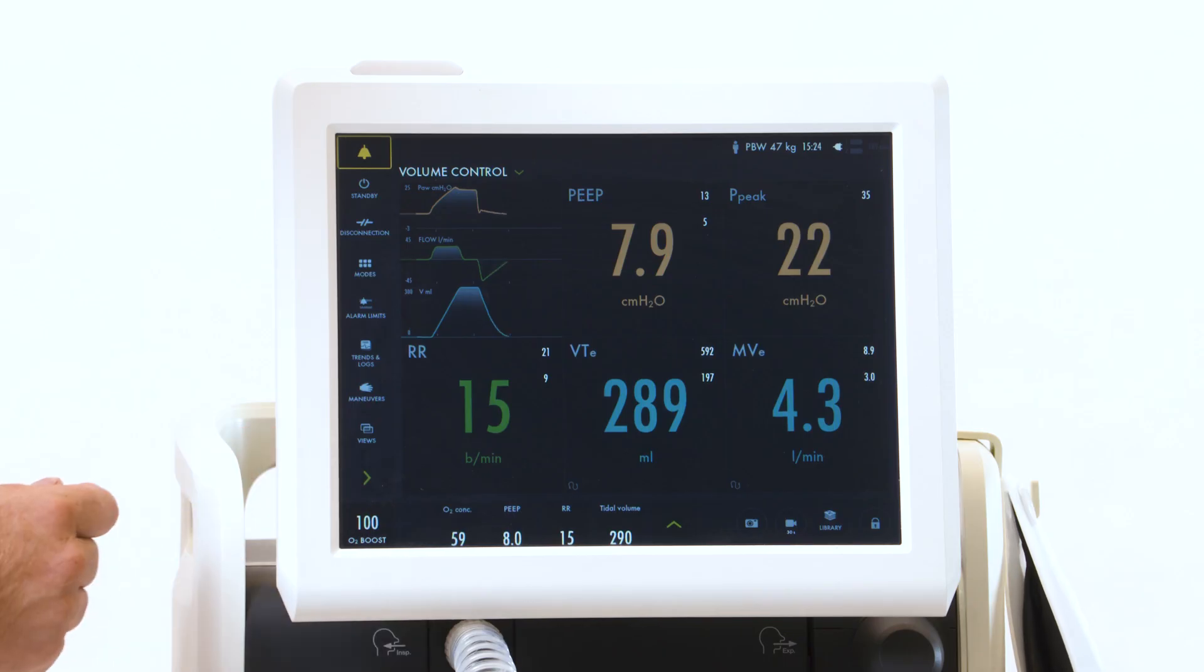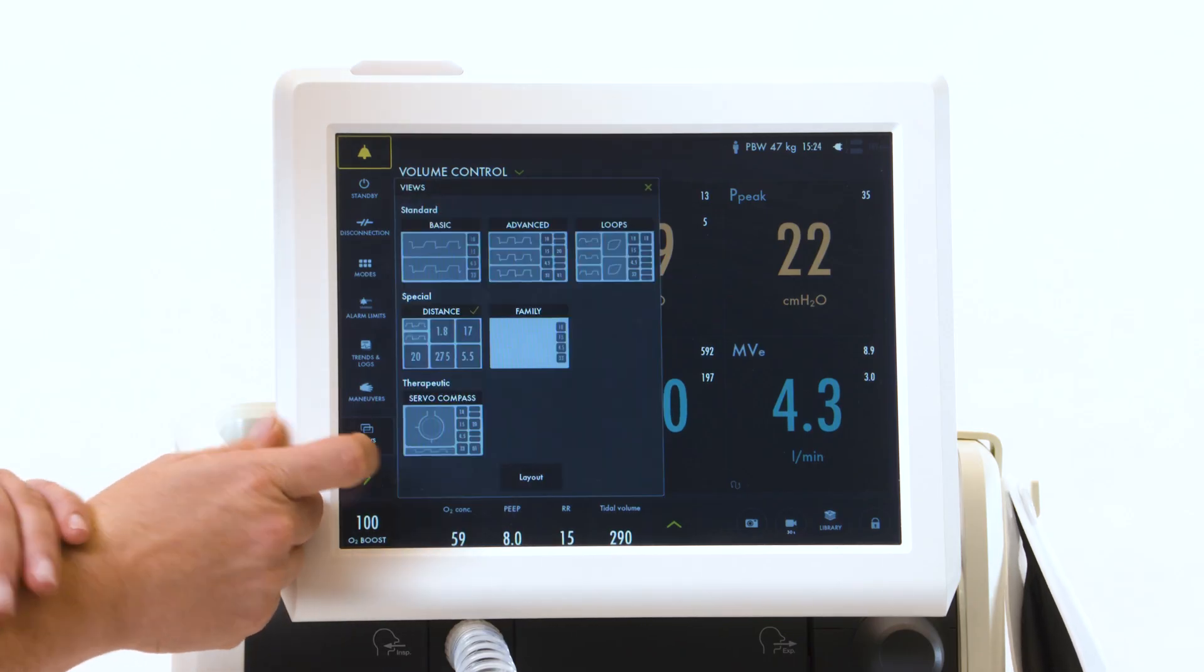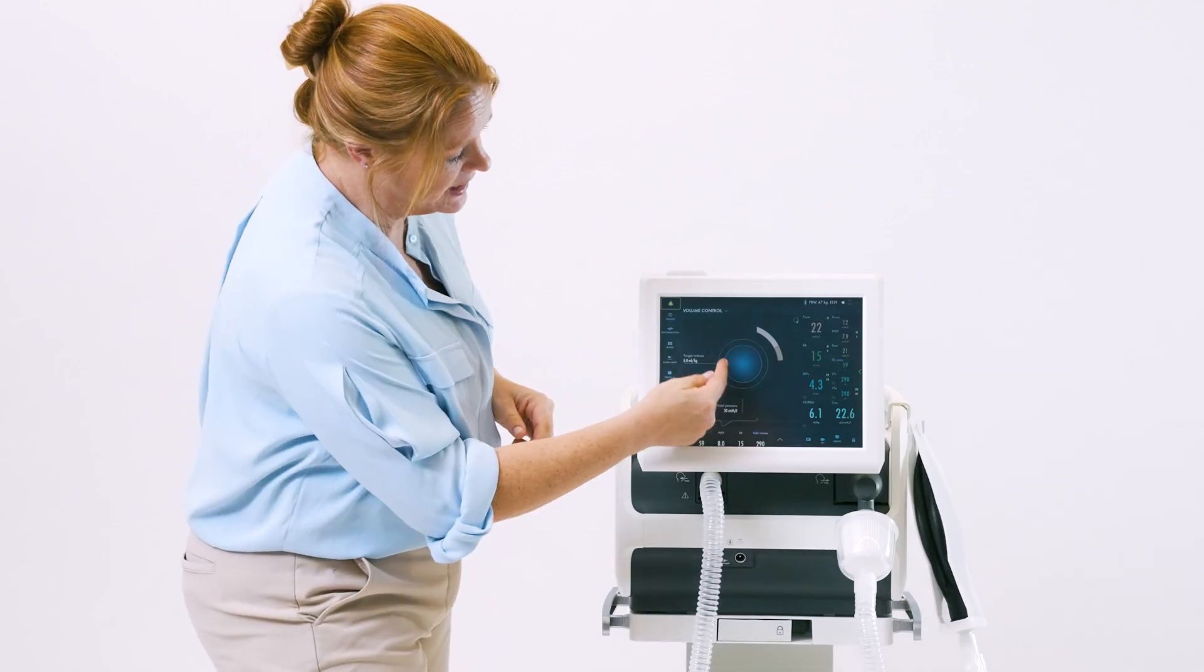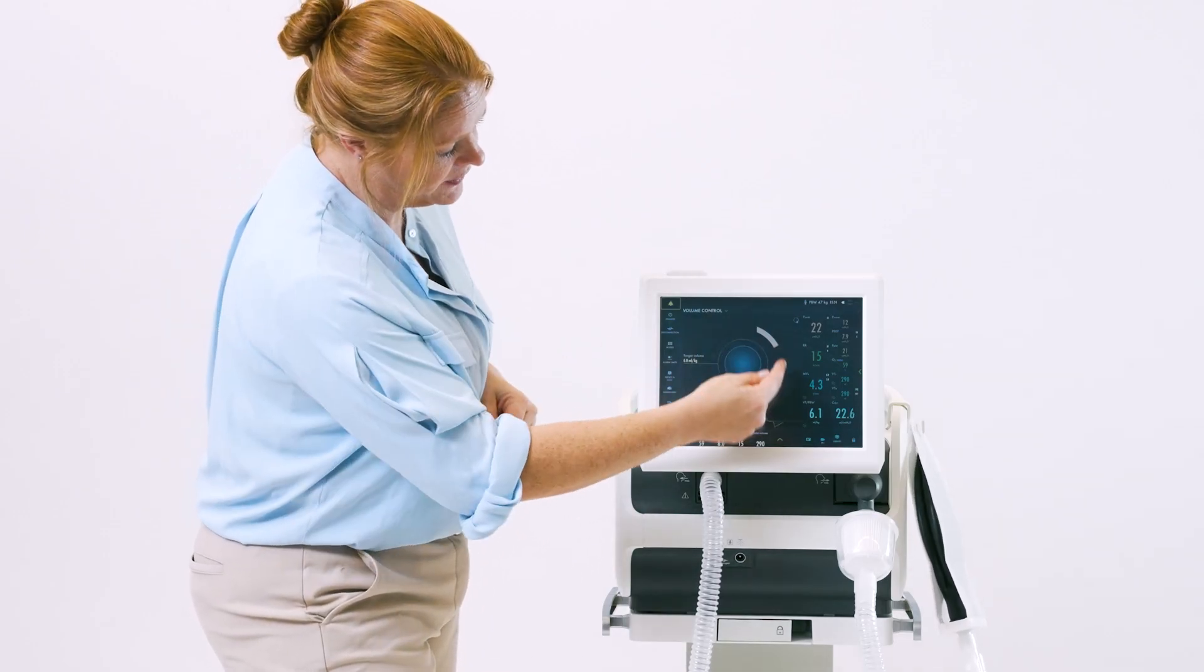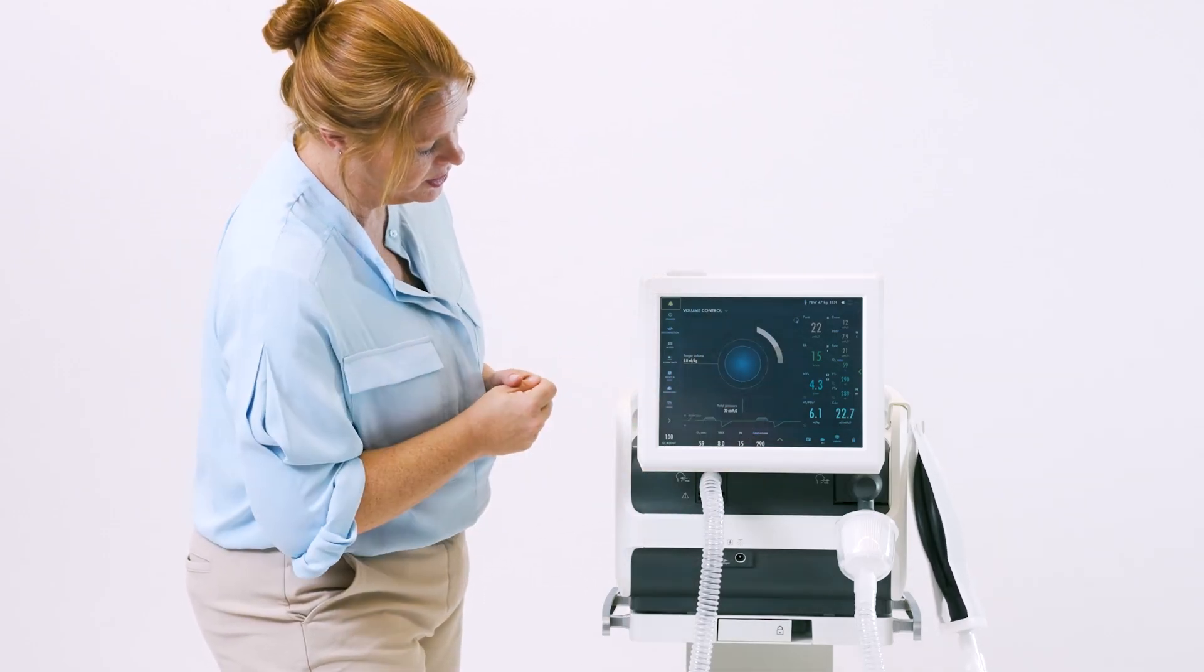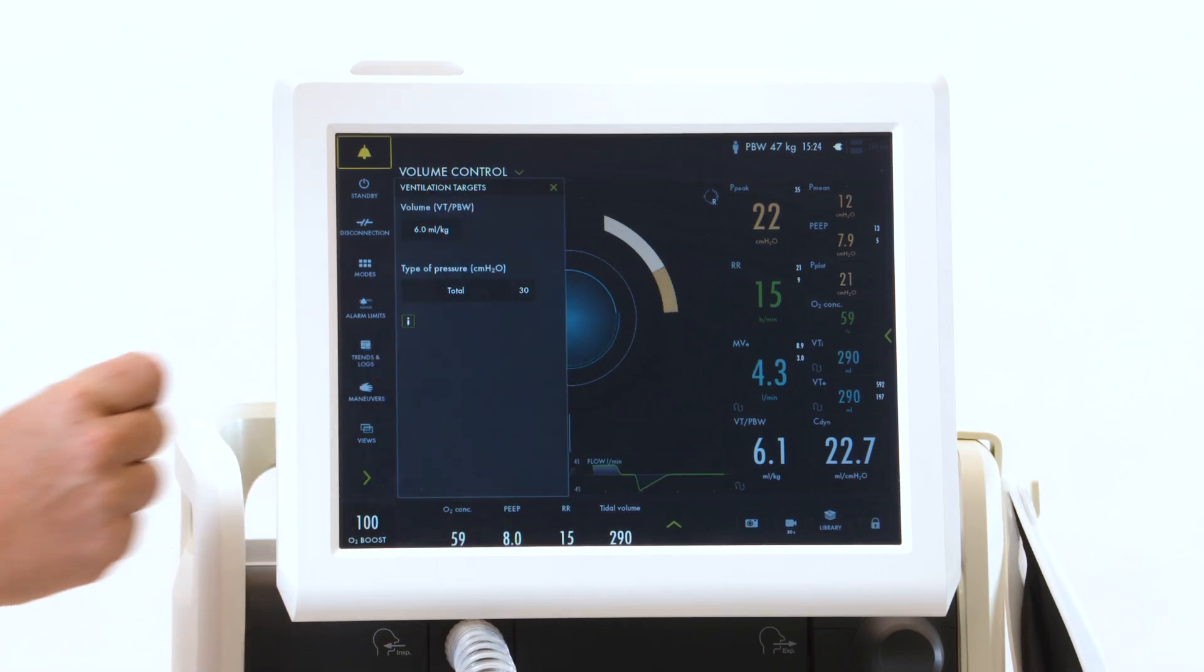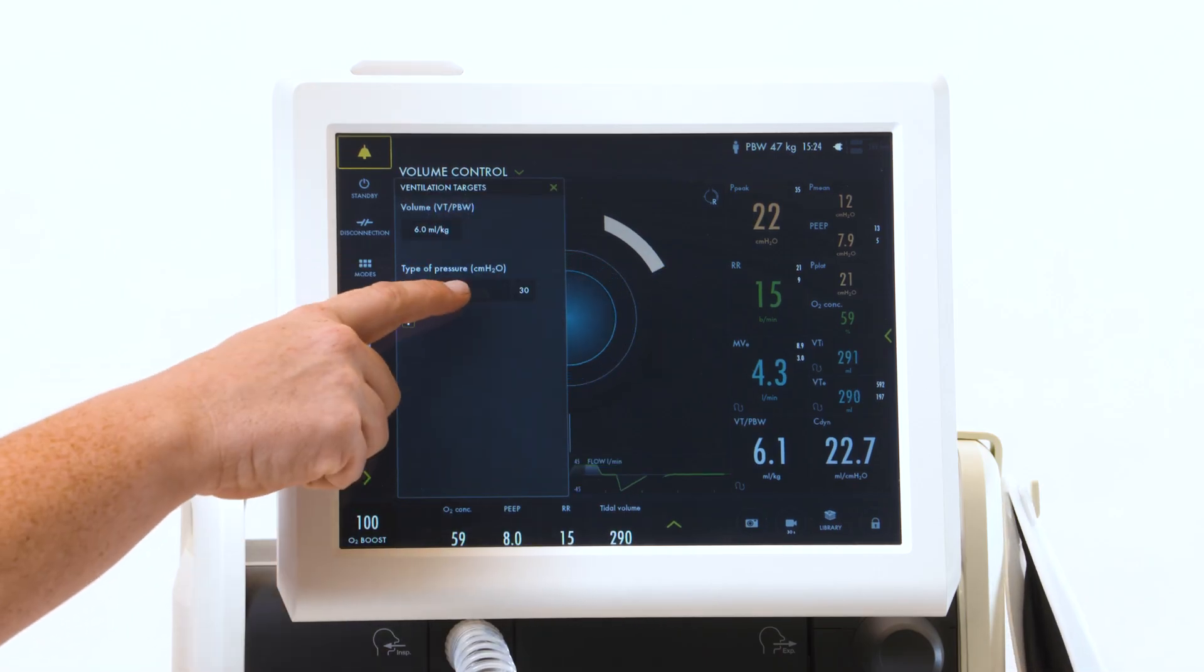Your last and final view is ServoCompass. ServoCompass is a snapshot looking at volume and pressure based on your settings. The inside being volume and the outside being pressure. You set a targeted tidal volume in mils per kilo, here, which can be adjusted,